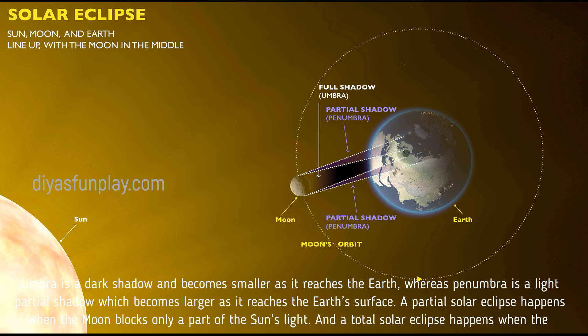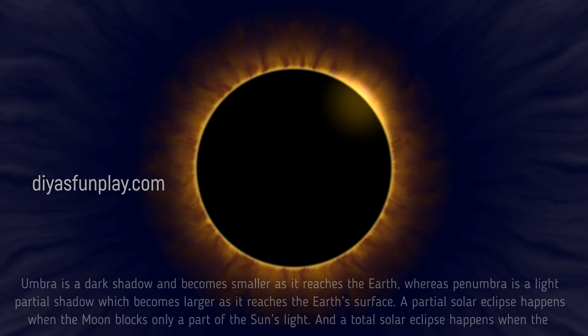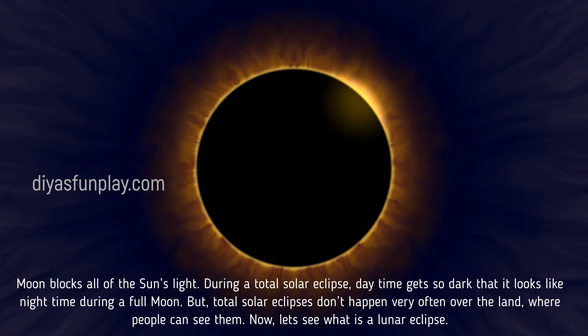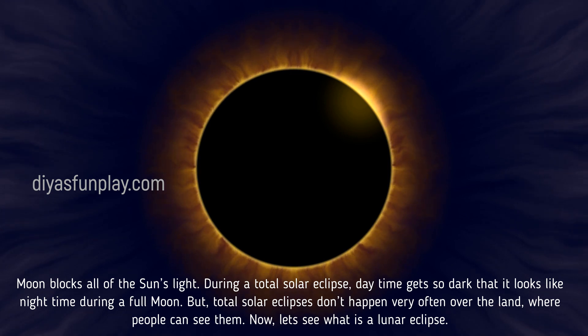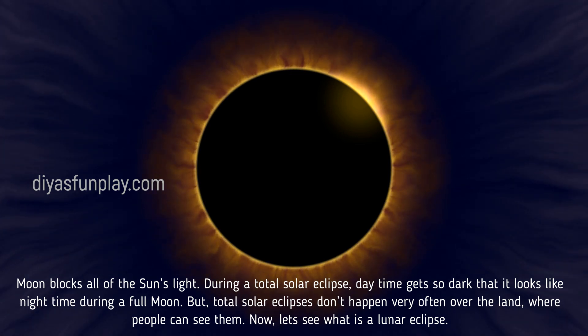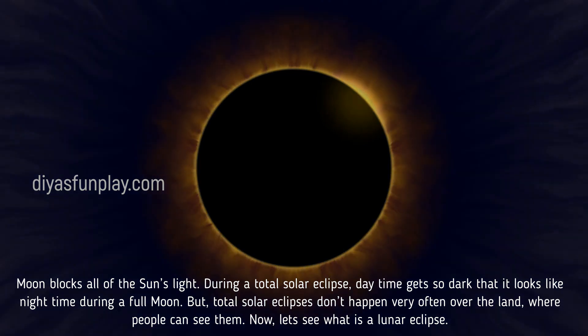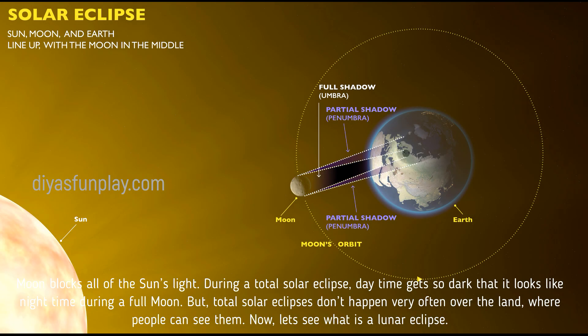A partial solar eclipse happens when the moon blocks only a part of the Sun's light, and a total solar eclipse happens when the moon blocks all of the Sun's light. During a total solar eclipse, daytime gets so dark that it looks like nighttime during a full moon day. But total solar eclipses don't happen very often over the land where people can see them.